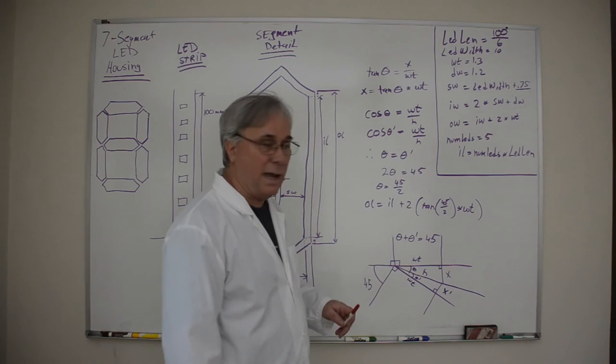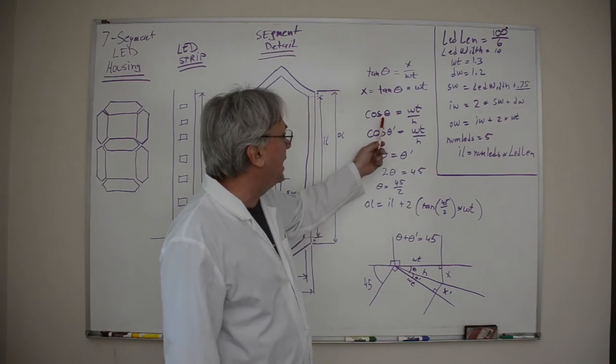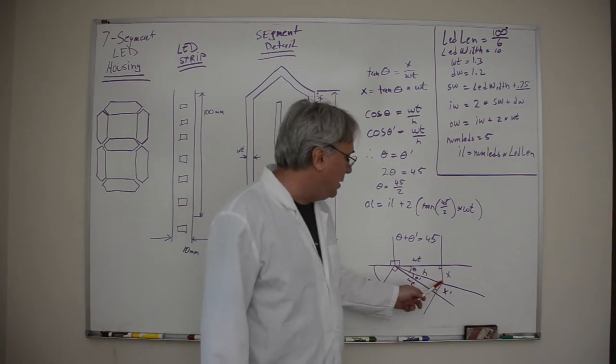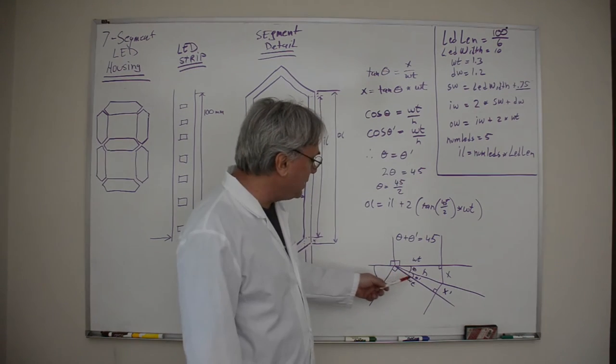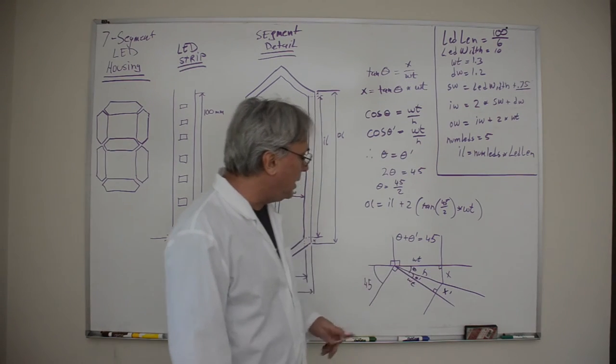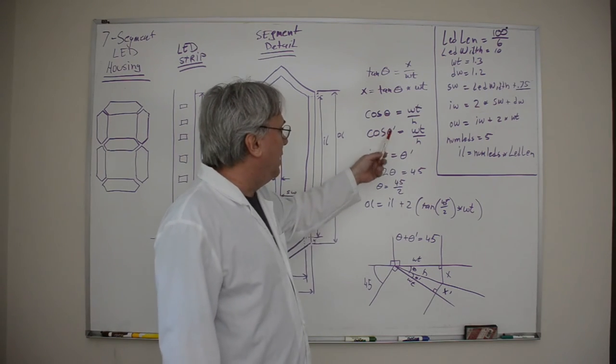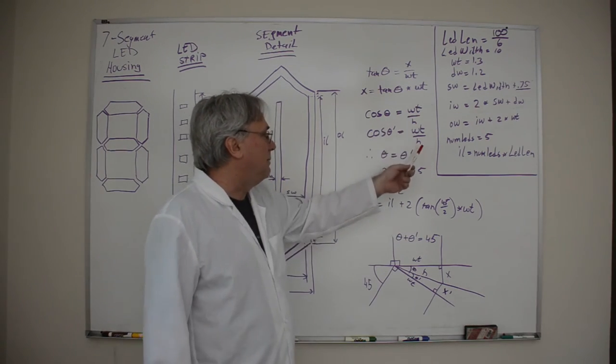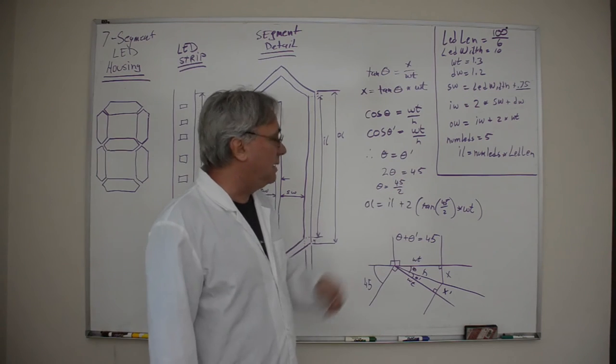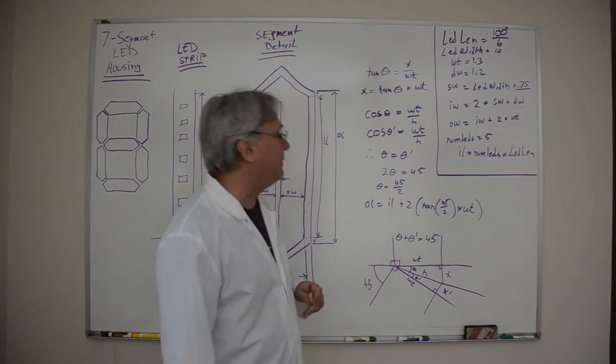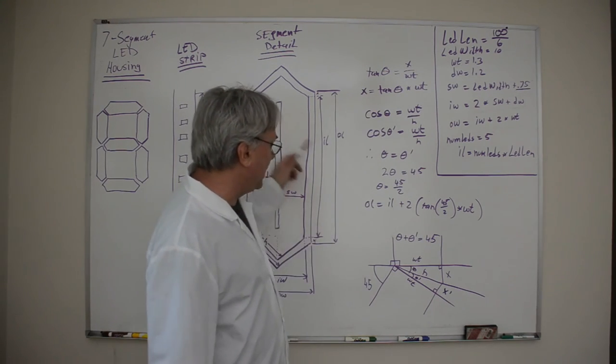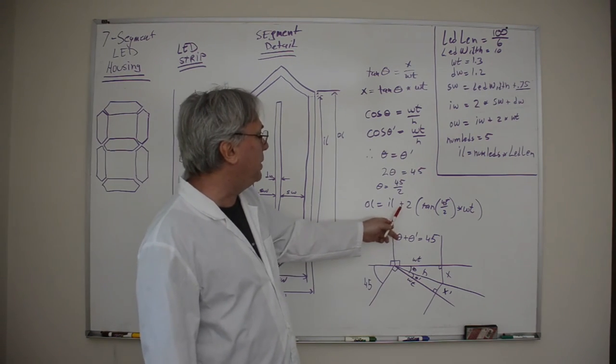Well I can observe that the cosine of theta is WT over H. I drew a hypotenuse and this other line that hits this point here and I also know that the cosine of theta prime is WT over H because both of these are right triangles. Now if you ever have the situation where cosine of theta and cosine of theta prime are both the same values then you know that both of these angles must be the same. Therefore 2 times theta does equal 45 and therefore theta does equal 45 over 2. We can substitute that back in this equation up here and into the bigger picture over here.